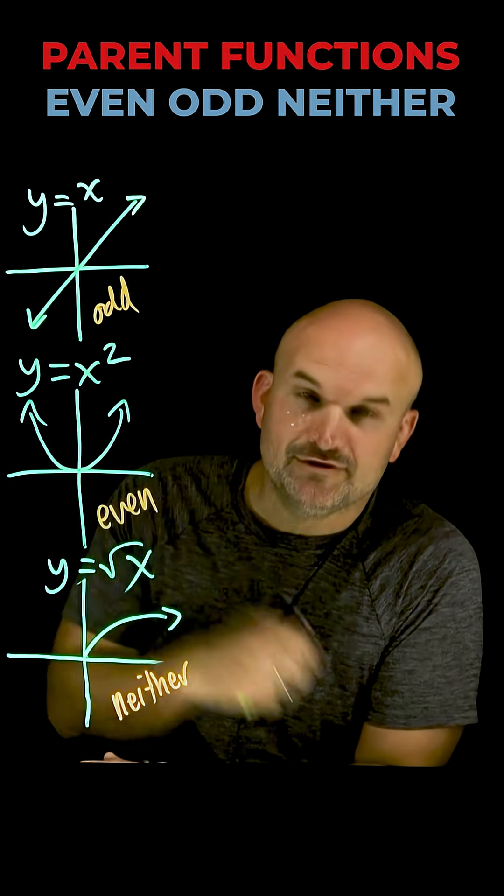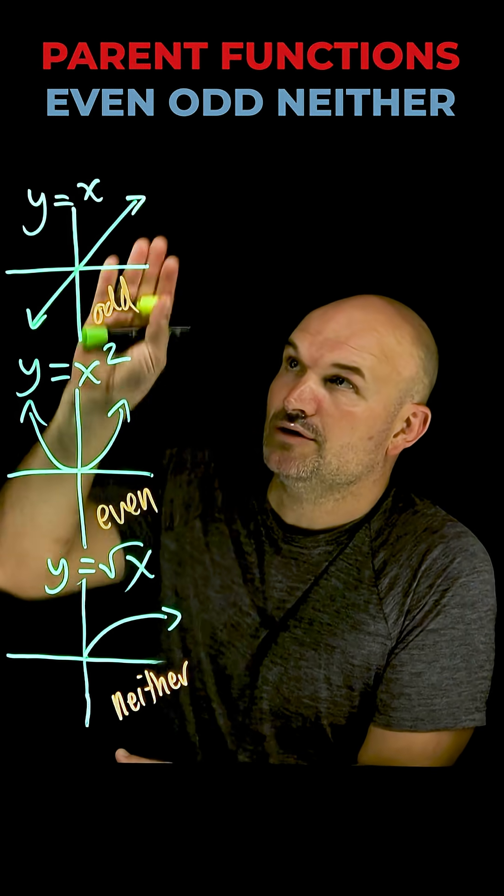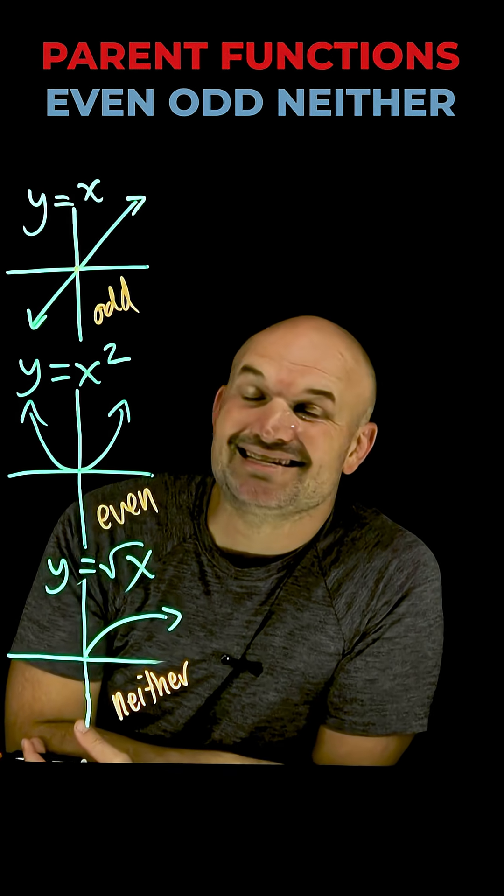The reason we call them odd, even, or neither is because of their symmetry. Odd functions are symmetrical about the origin. Reflect it about the y-axis, then reflect about the x-axis, and you get the exact same graph.